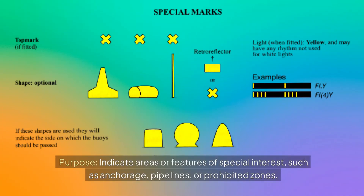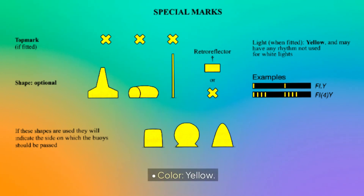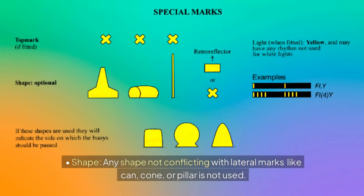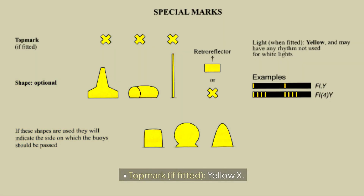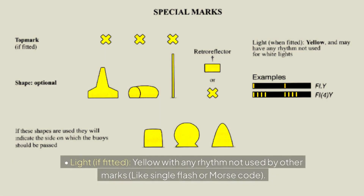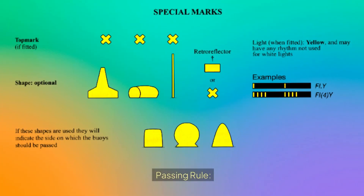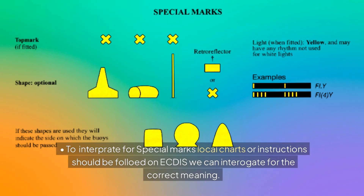Special marks. Purpose: indicate areas or features of special interest such as anchorage, pipelines, or prohibited zones. Color: yellow. Shape: any shape not conflicting with lateral marks. Top mark if fitted: yellow X. Light if fitted: yellow with any rhythm not used by other marks, like single flash or Morse code. Passing rule: consult local charts or ECDIS for the correct meaning.